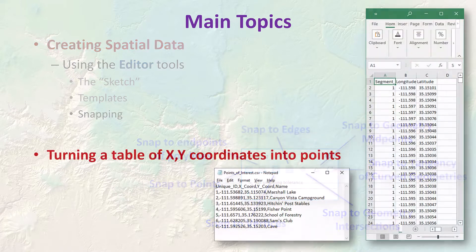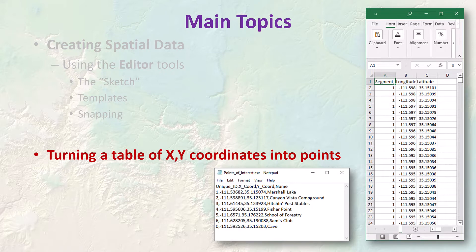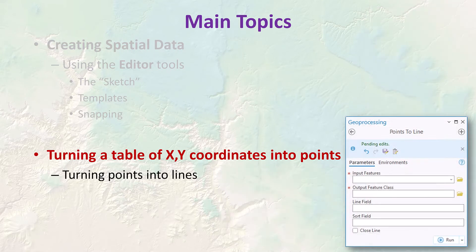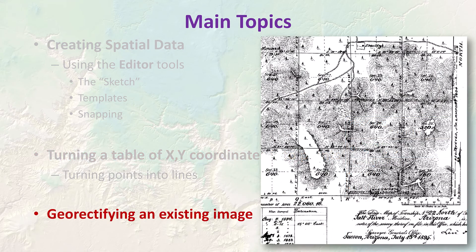Another common way to create point feature classes is to just turn a table of coordinates into a point feature class. We'll also see how to turn a point feature class of points into polylines by stringing them together, and we'll learn how to georectify an image so that it conforms correctly to the real world.